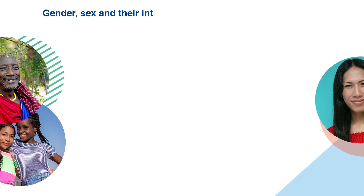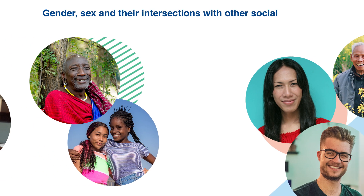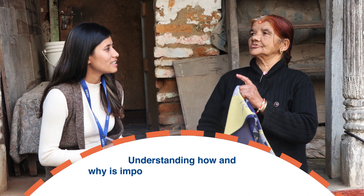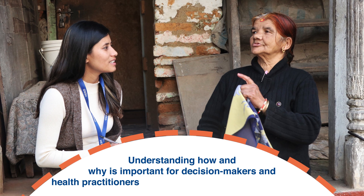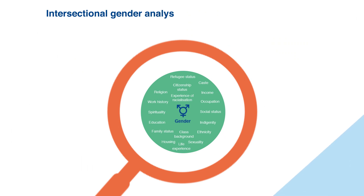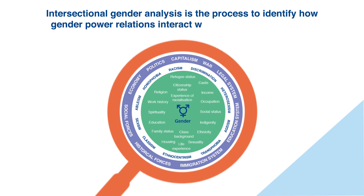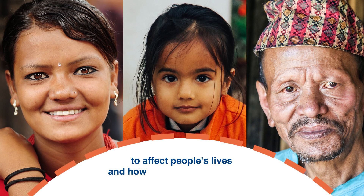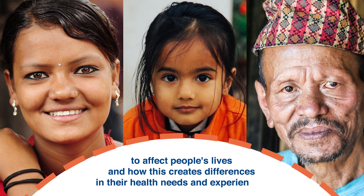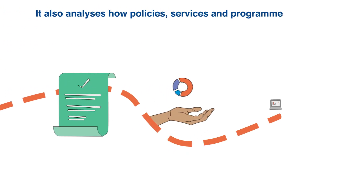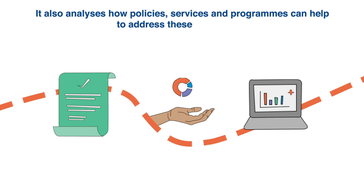Gender, sex and their intersections with other social variables influence everyone's health. Understanding how and why is important for decision makers and health practitioners to improve the health of their citizens. Intersectional gender analysis is the process to identify how gender power relations interact with other social variables to affect people's lives and how it creates differences in their health needs and experiences. It also analyses how policies, services and programs can help to address these differences.